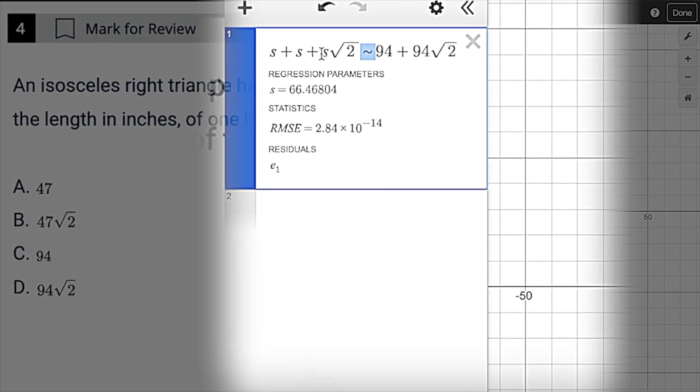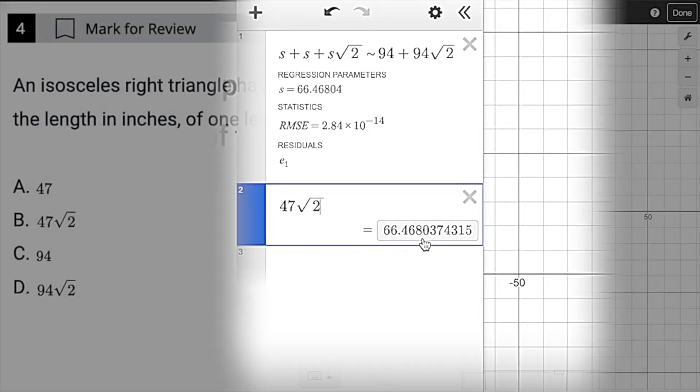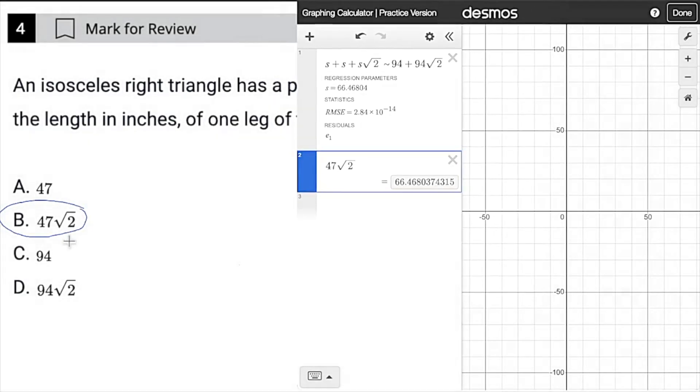Remember, if we're using s instead of x, we have to use the tilde here instead of equals 94 plus 94 root 2. And now it gives us the value of s, which is what it's asking us. So we have this silly little number, so we know it's either going to be b or d. We put in choice b, 47 times the square root of 2. It is the same number. That is our answer, choice b.